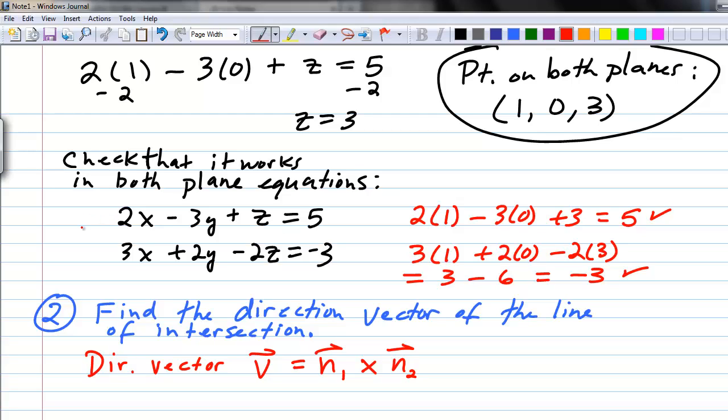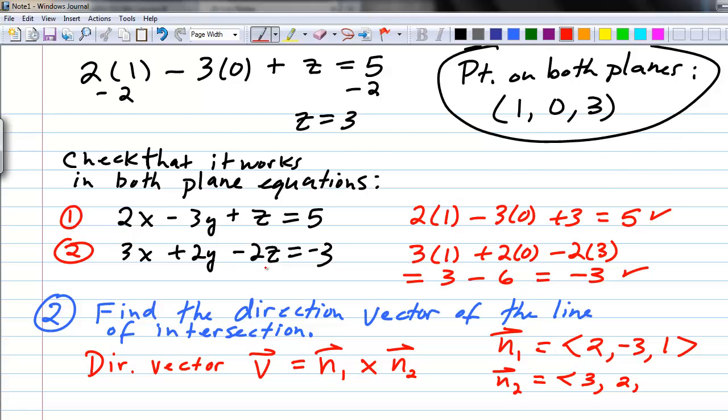Where do we get these normal vectors from? It turns out that we're able to use the coefficients of the x, y, and z in the plane equation to read off the normal vectors. For the first plane equation, which I'll label 1, the normal vector would be 2, negative 3, 1. And for the second equation, which I'll label 2, n2 would be equal to 3, 2, negative 2.